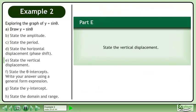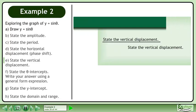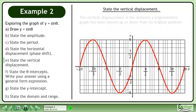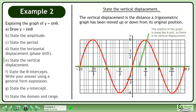In part e, state the vertical displacement. The vertical displacement is the distance a trigonometric graph has been moved up or down from its original position. The midline of the graph is along the theta axis, so there is no vertical displacement.